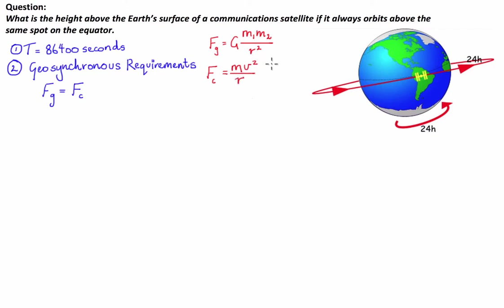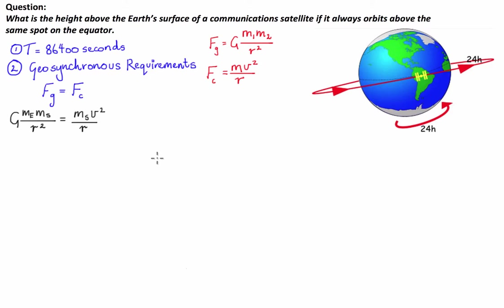Now we've established the formulas, let's substitute both into our equality. For the gravitational force we use Newton's law of universal gravitation, with the mass of the Earth and the mass of the satellite. This must equal the centripetal force, where the mass is the mass of the satellite. The next step is to cancel any duplicated variables on each side.